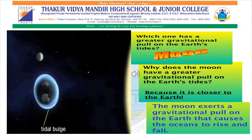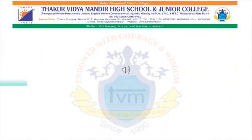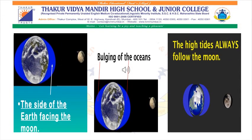The moon has a greater gravitational pull on the earth's tides as it is much closer to the earth than the sun. The moon's gravitational pull causes the oceans to bulge. As you can see in the blue color in the picture, the oceans bulge in two places: the side of the earth facing the moon, and the side of the earth facing exactly away from the moon. Each of these bulges causes a high tide. At the same time, low tides occur between the two bulges. The high tides always follow the moon.